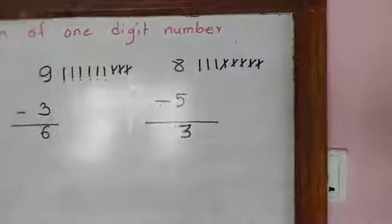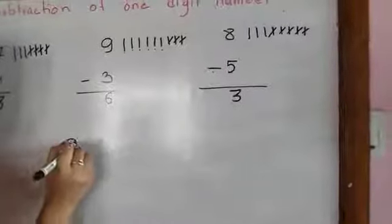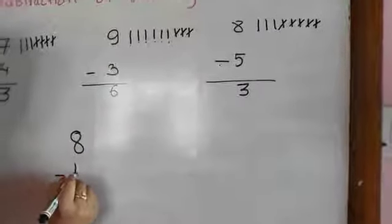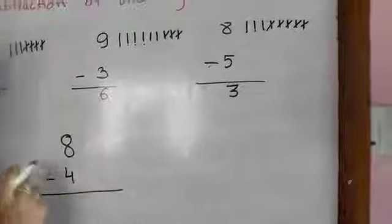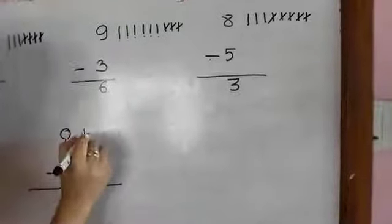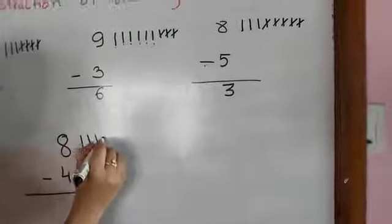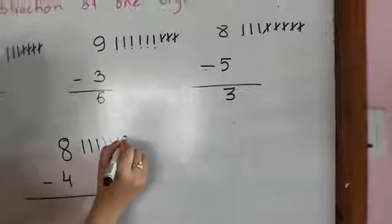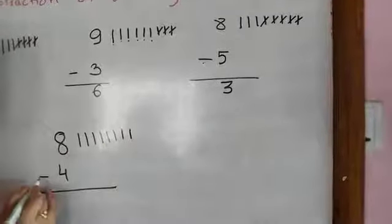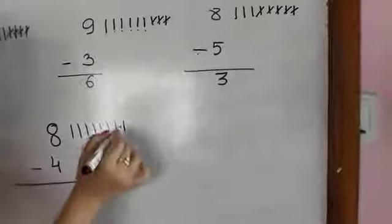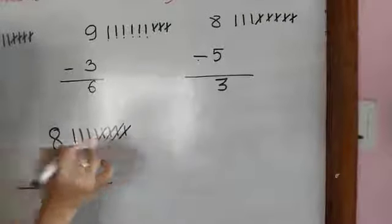So let me do one more example for you. If we have 8 here and we need to minus 4, we will draw 8 sticks: 1, 2, 3, 4, 5, 6, 7, 8. This sign says to minus, then we need to minus 4: 1, 2, 3, 4.